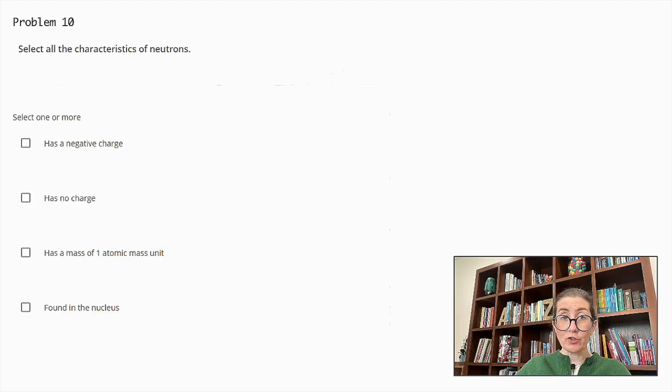Select all the characteristics of neutrons. Select one or more. When we see this, this is an indication that there is probably more than one correct answer amongst the options. So before we get into the options, let's look at the characteristics of neutrons. They are neutral particles. They don't carry charge. Their mass is approximately equal to that of a proton, which is around one atomic mass unit. And like protons, they reside in the nucleus of an atom.